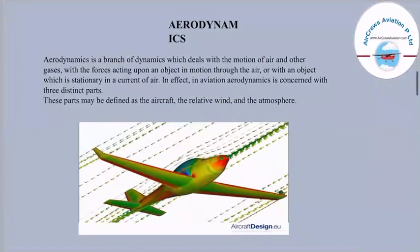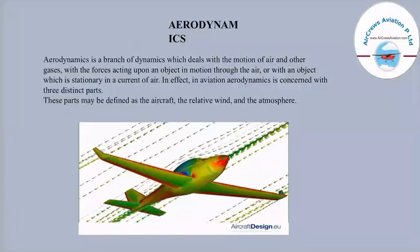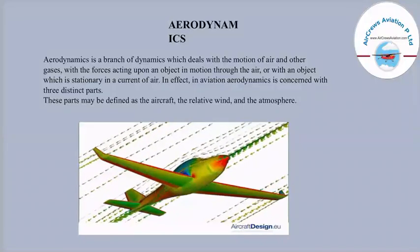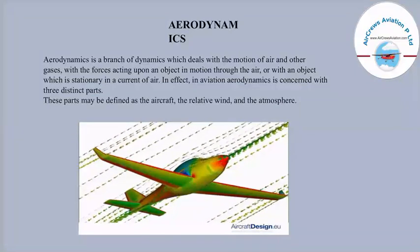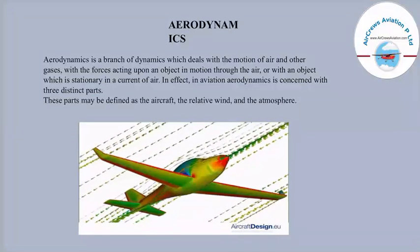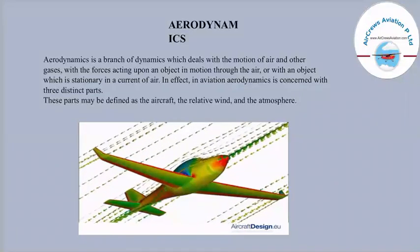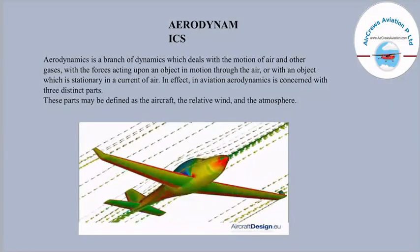Proceeding with today's topic — aerodynamics. Aerodynamics is a branch of dynamics which deals with the motion of air and other gases and the forces acting upon an object in motion through the air. That object can be an aircraft, a kite, or any object in motion through air or stationary in a current of air. In aviation, aerodynamics is concerned with three distinct parts: the aircraft, the relative wind, and the atmosphere.